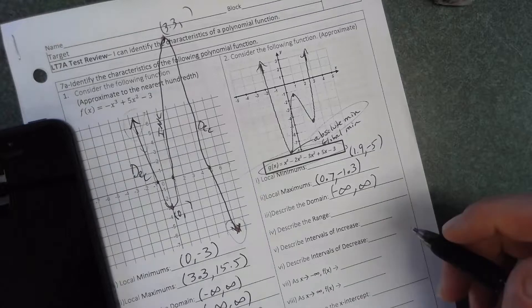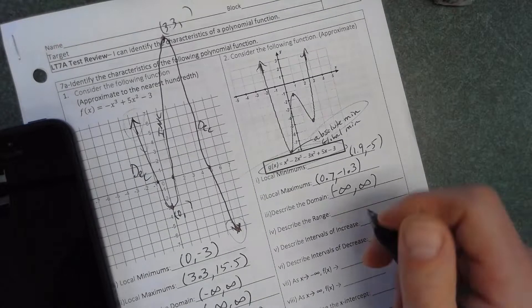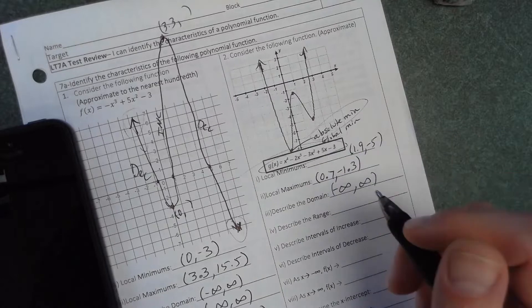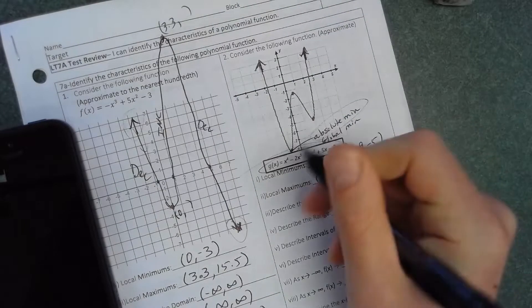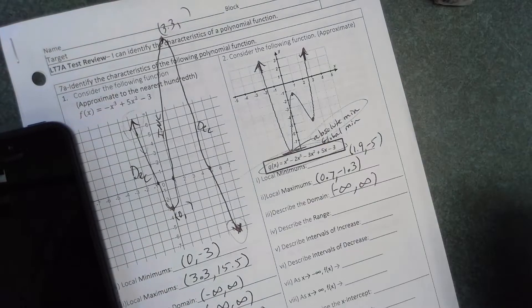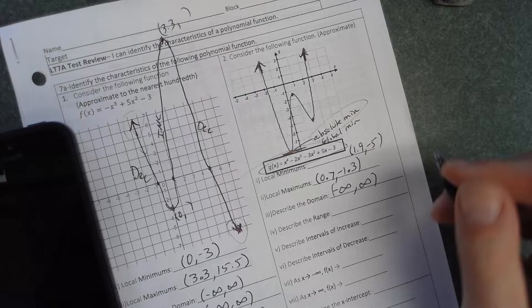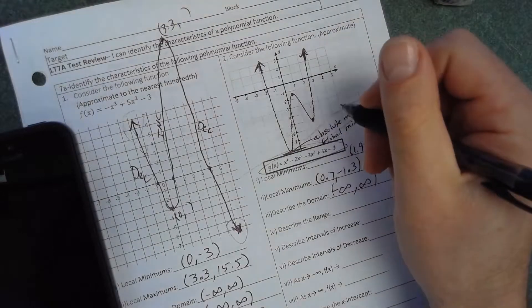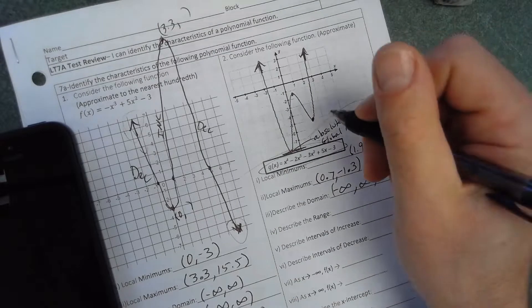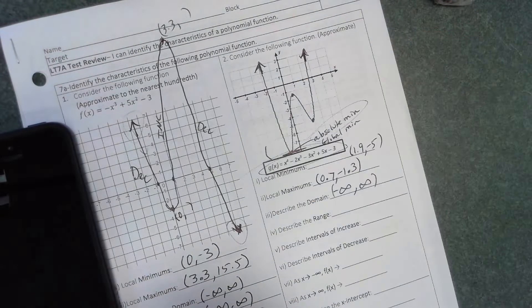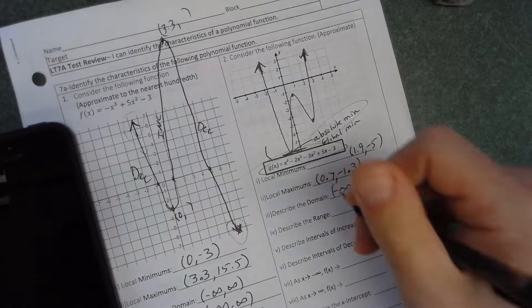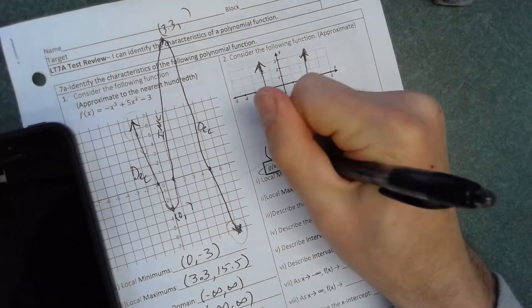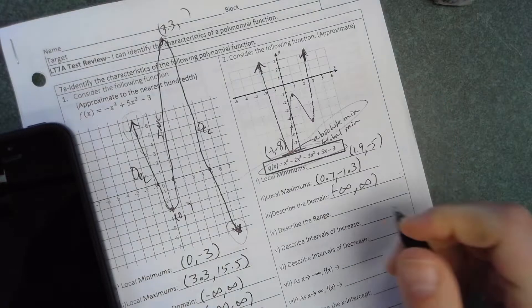Range here, we got it. There's not just negative infinity to infinity because both the arrows, right side and left side, are going up. So our lowest point of the graph is right here. We do have to know what this absolute minimum is, and I'm going to put it at about negative 8. So about negative 1, negative 8. So the range is going to go from negative 8 to infinity.